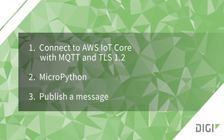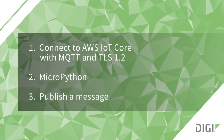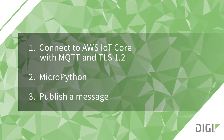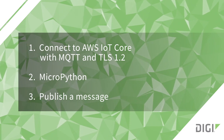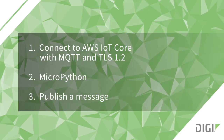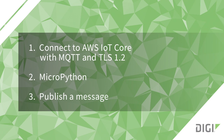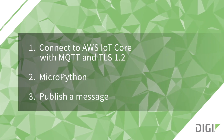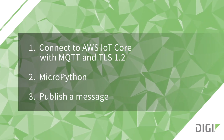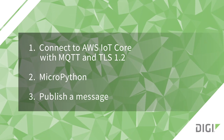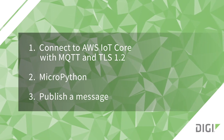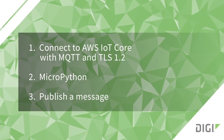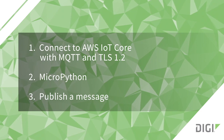During this tutorial, we'll cover setting up a connection to AWS IoT Core using MQTT and TLS. We'll show you how to download a MicroPython library from GitHub and load the library into the modem. And finally, we'll publish a message from DigiXP3 to AWS using the MQTT protocol.